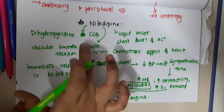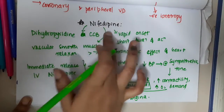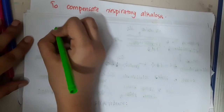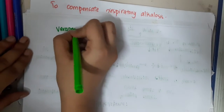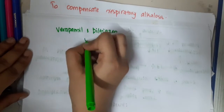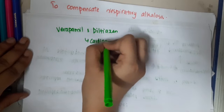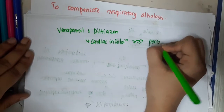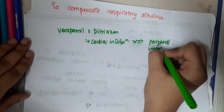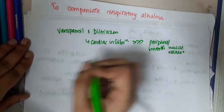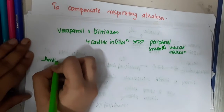One important point: nifedipine's vascular smooth muscle action is more pronounced compared to its chronotropic effect on the heart. But if you look at verapamil and diltiazem, cardiac inhibition is more pronounced than peripheral smooth muscle relaxation.